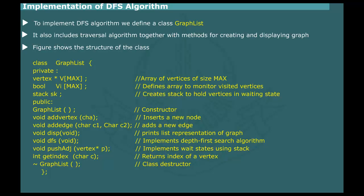The figure shows the structure of the class named GraphList. It uses two external classes called vertex and stack. The graph itself is implemented as a linked list. Observe that the class includes following private members: A pointer array vertex of size max which holds pointers to the graph vertices. An array VI of logical values which shows whether or not a vertex is visited. A stack SK which is used to handle vertices in weight state.